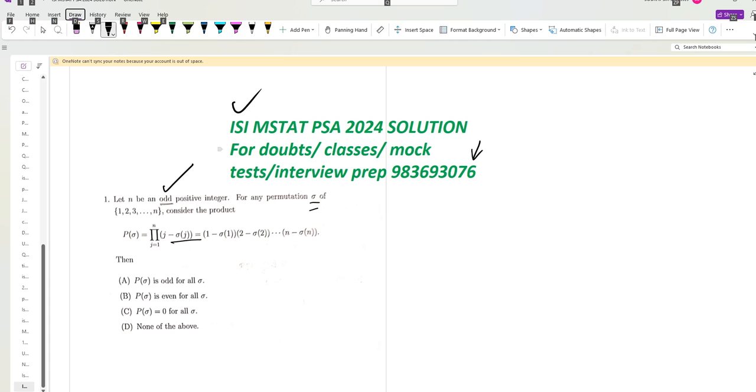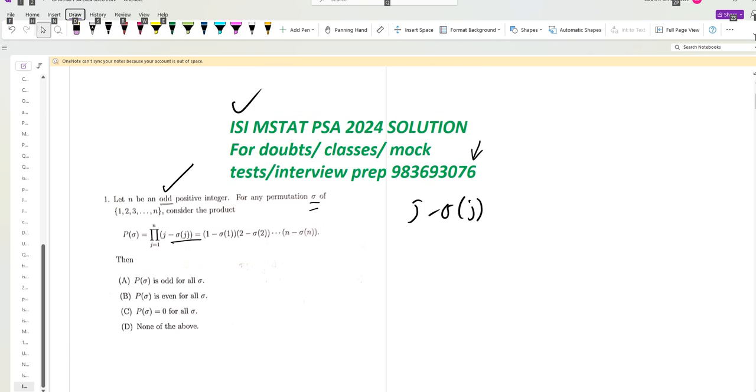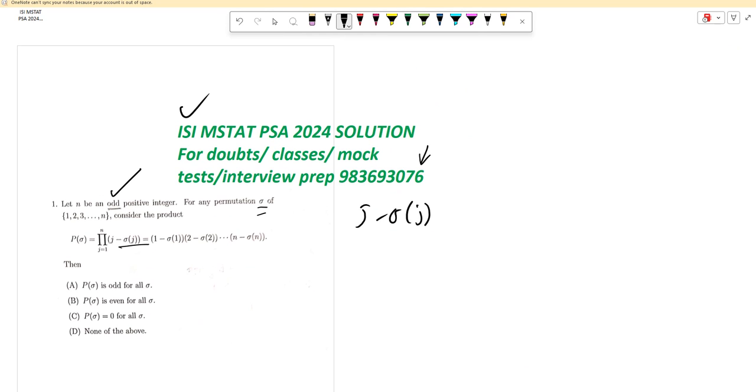This you need to work on. Now if j equals sigma j, so j minus sigma j equals zero, that's for sure. Okay, that's one case, and otherwise it is non-zero.